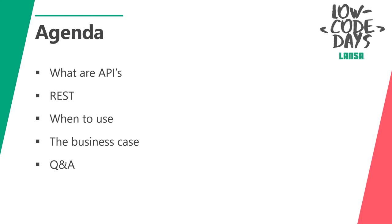If you also joined the keynote today, Edgar showed us that in future releases we will add new functionality to the Visual Lanza platform that will make it even easier to add, expose, and consume APIs than it already is today. First we'll go through the different types and categories of APIs, then deeper into REST APIs, followed by some scenarios for modernizing and extending existing applications. Last but not least, I'll show a demonstration. Please use the Q&A button in Zoom if you have questions — I'll try to answer all of them after the session.